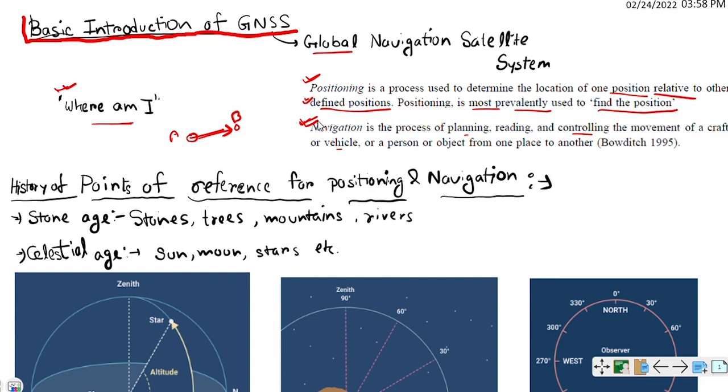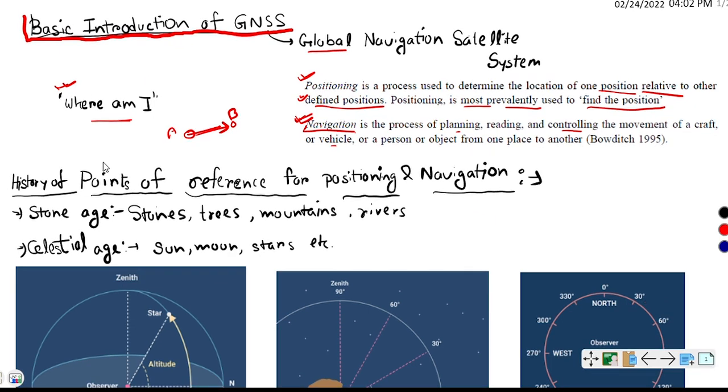What is the history of point of reference for positioning and navigation? Human civilization is trying to find the answer where am I from the Stone Age.